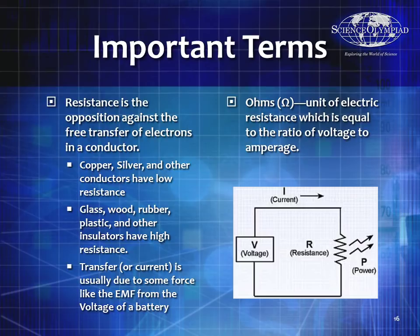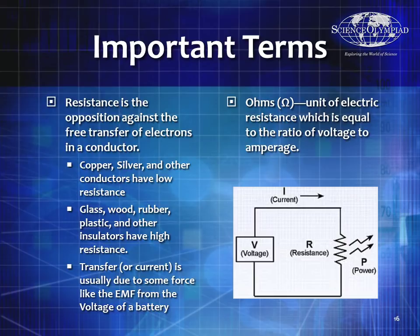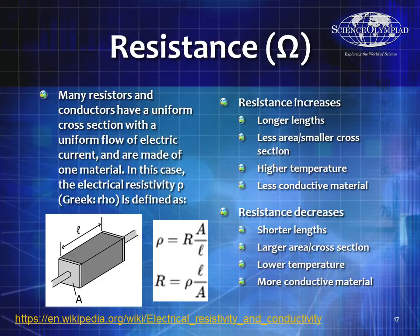Resistance is the opposition against the free transfer of electrons in a conductor. Some things have low resistance — we call them conductors, like copper and silver. Some have very high resistance, like glass, wood, rubber, and plastic — we call them insulators. We measure resistance in ohms, which is equal to a volt divided by an ampere. How do you figure out the resistance of a material? Resistivity (rho) equals R times area divided by length (L), or equivalently, resistance equals rho times length divided by area. So, higher resistivity means higher resistance; longer length means higher resistance; but bigger cross-sectional area means lower resistance.